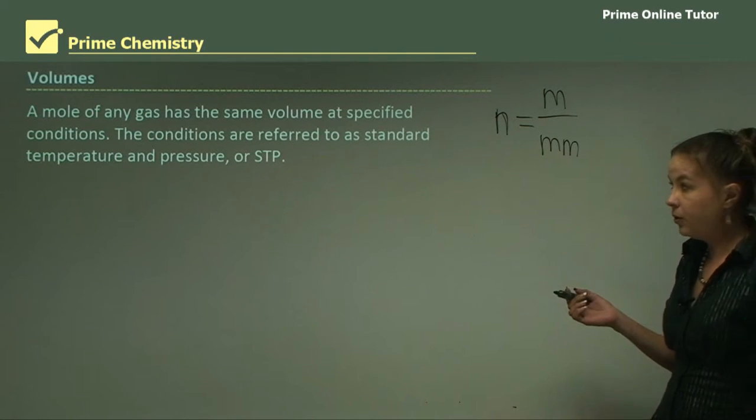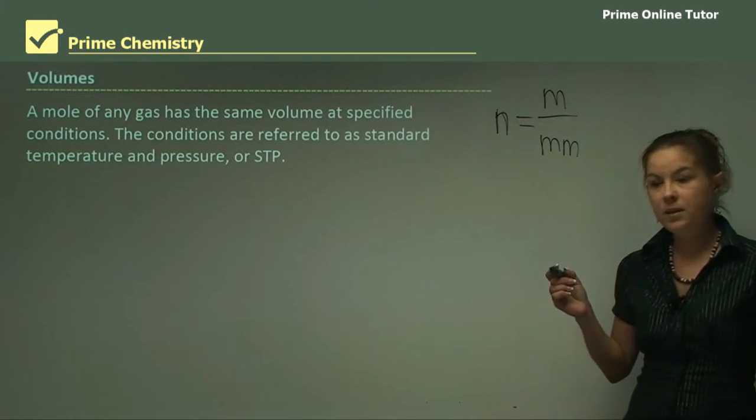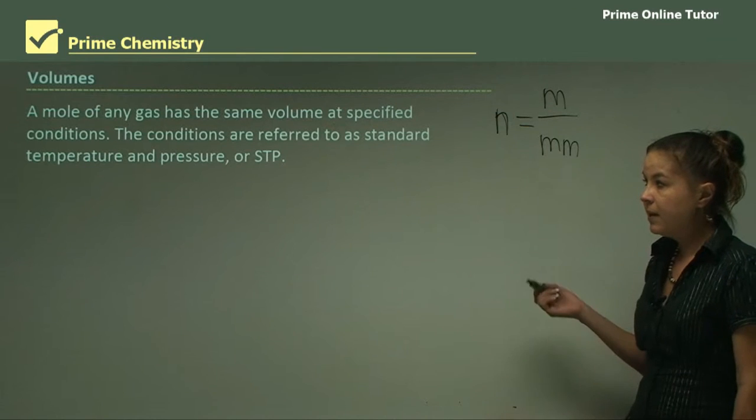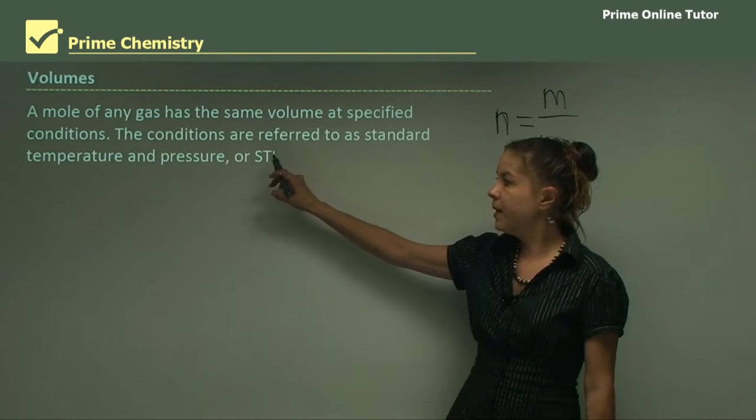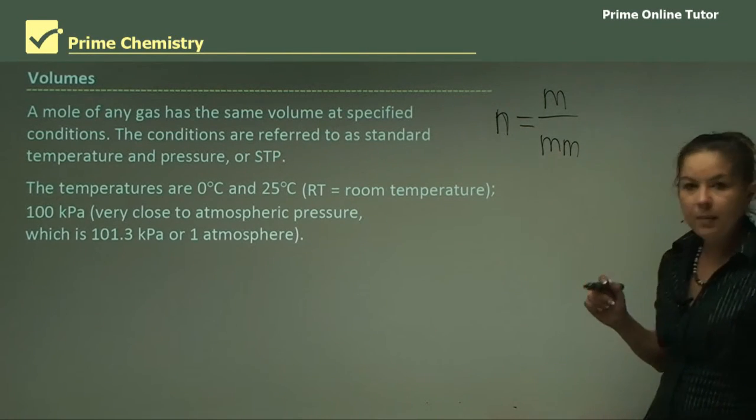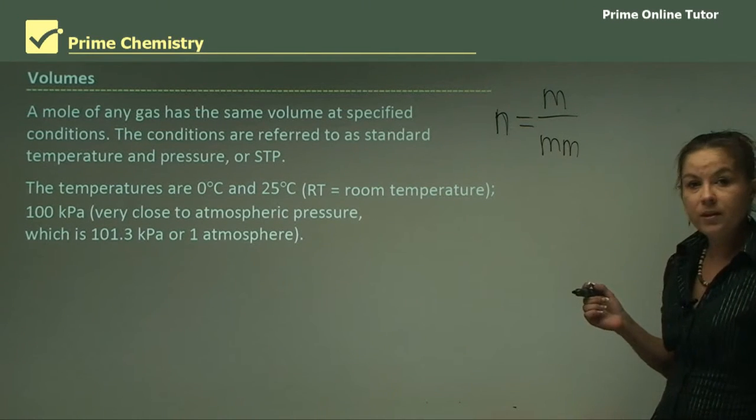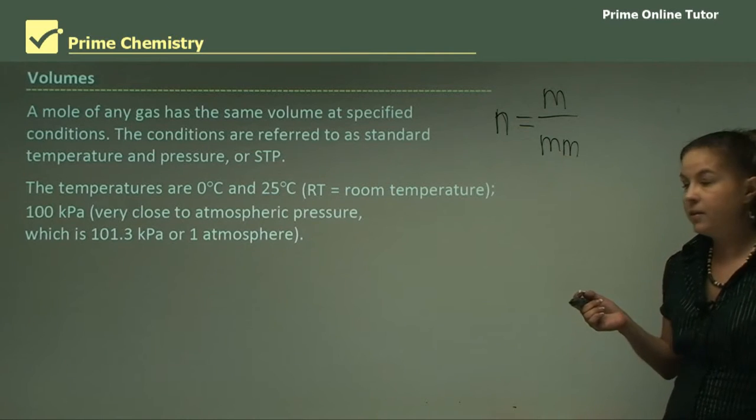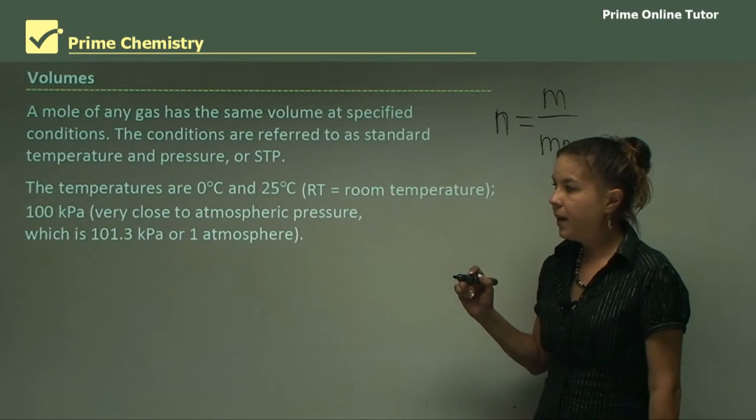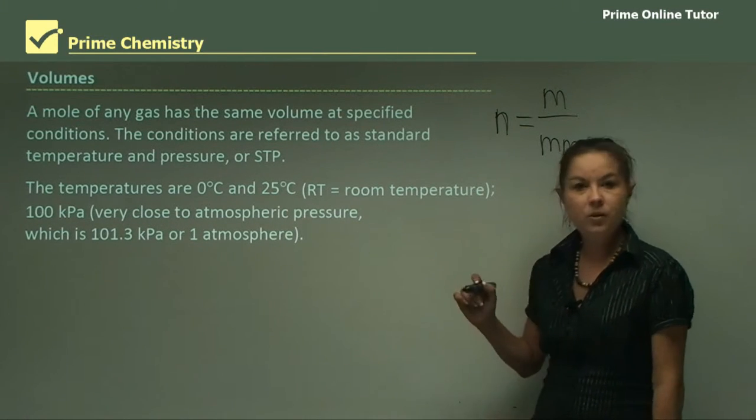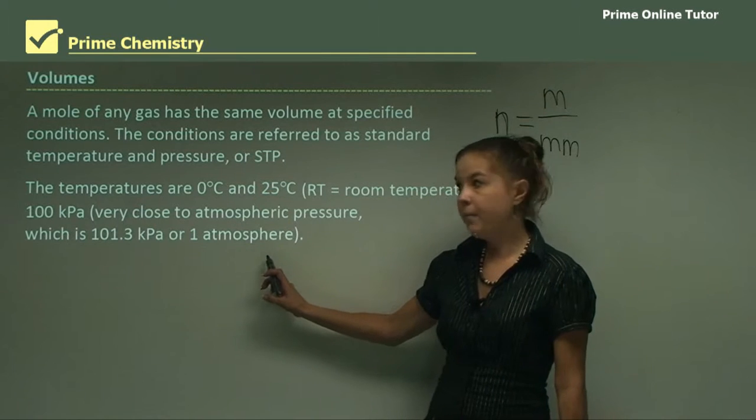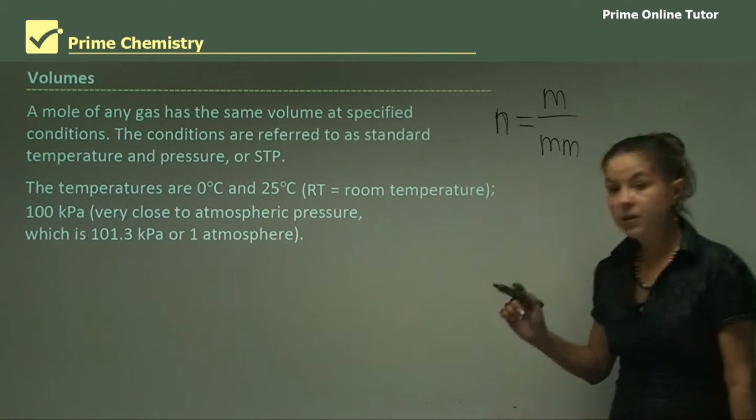So now moving on to volumes. A mole of any gas has the same volume at specified conditions. The conditions are referred to as standard temperature and pressure, or STP. You'll probably see this quite a lot. So the two temperatures that we work with are 0 degrees Celsius and 25 degrees Celsius, which is generally room temperature, or RT for short. And also 100 kilopascals, or kPa, which is very close to atmospheric pressure. And atmospheric pressure is 101.3 kPa, or one atmosphere. But for these purposes, we use 100 kPa.